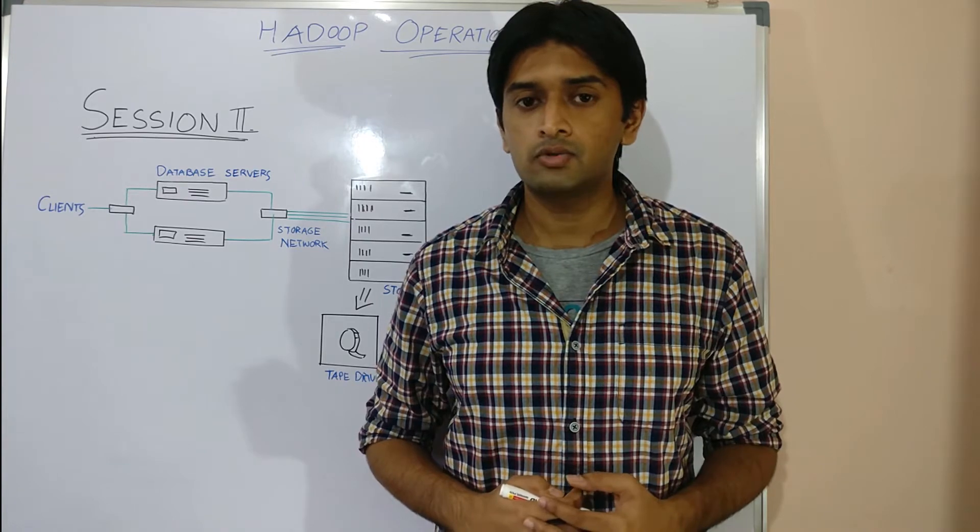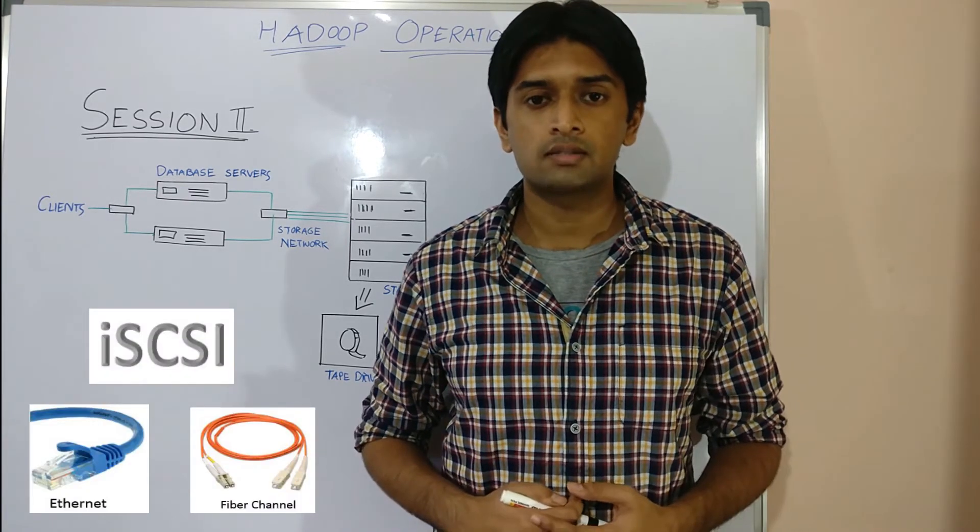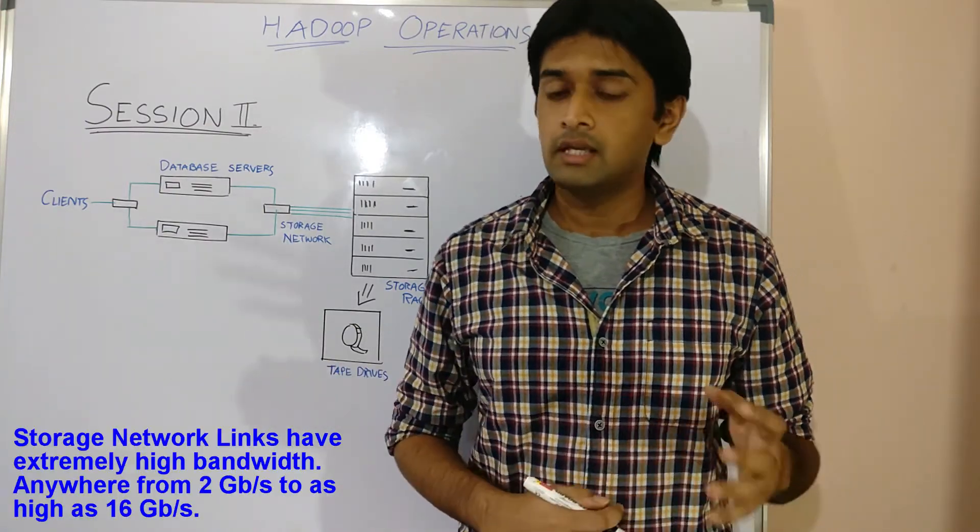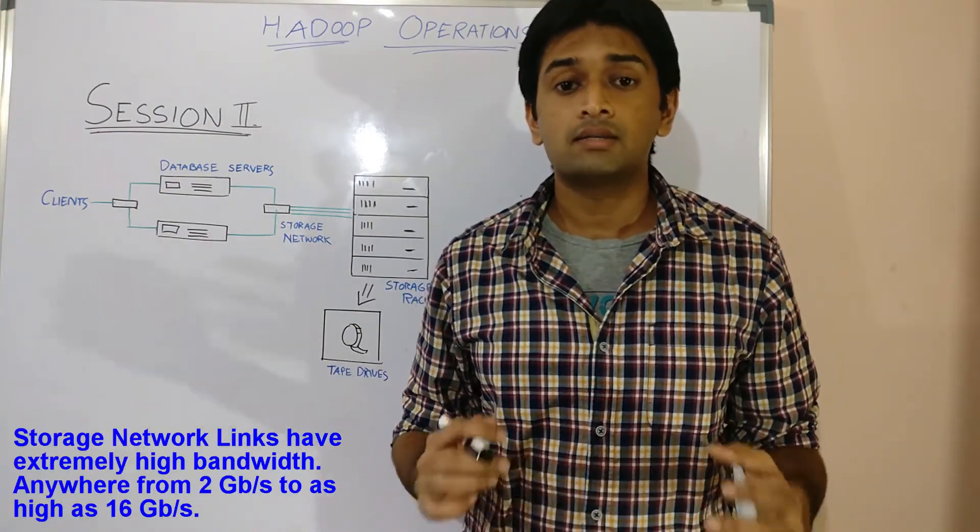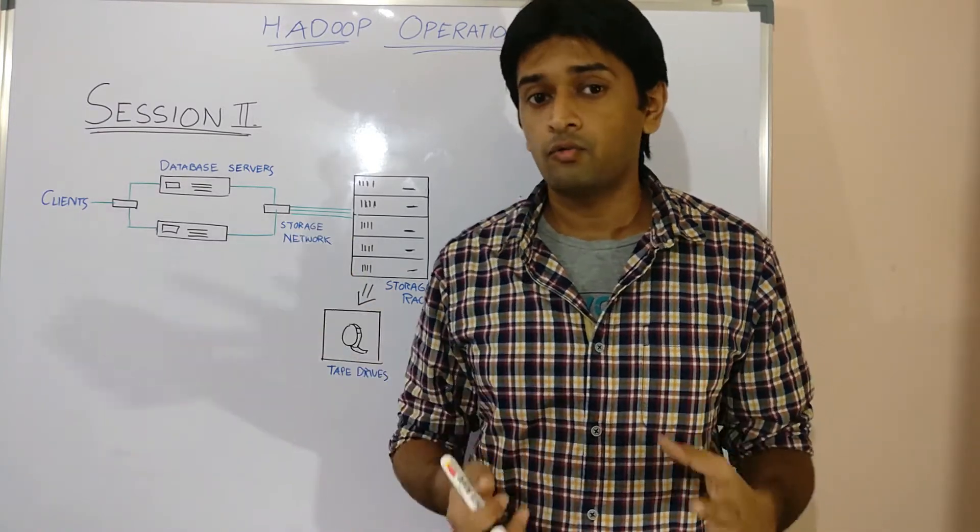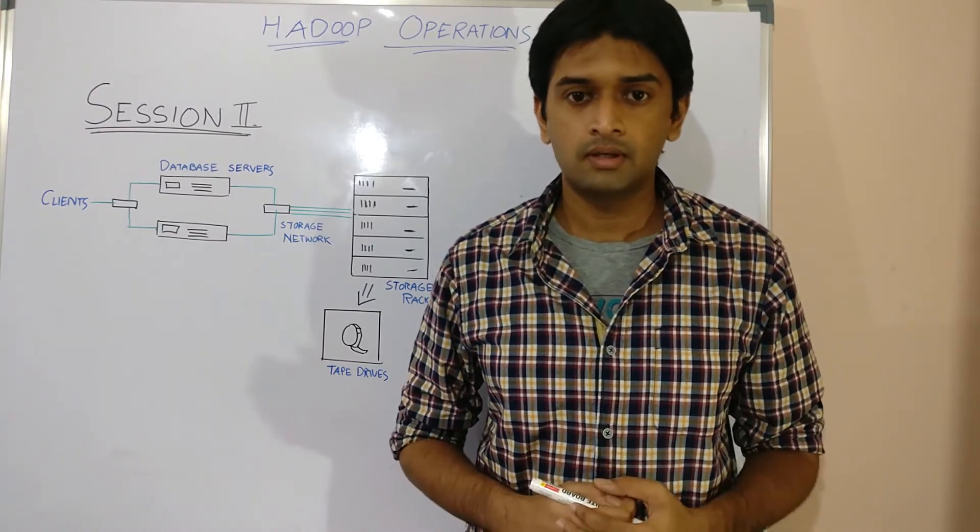These network links can use technologies like iSCSI, Fiber or even Ethernet in case of NAS. Even though these links have extremely high bandwidth anywhere from 2 gbps to as high as 16 gbps, transferring data repeatedly for each job or query over these links can create huge bottlenecks when you scale to big data.